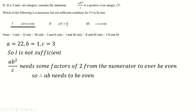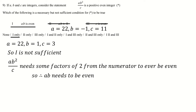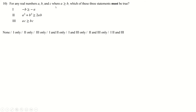Checking the other conditions: for 'ab > 0', using a = −2 gives ab²/c as a positive even integer while ab is not greater than zero, so that condition is not necessary. For 'c is even', we already have a counter-example showing c doesn't need to be even. So the answer is condition 1 only.